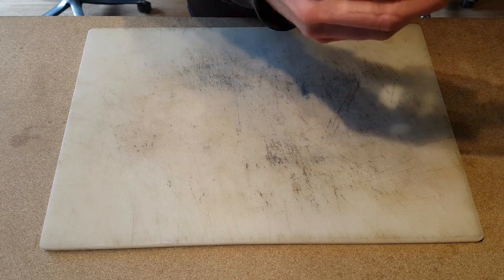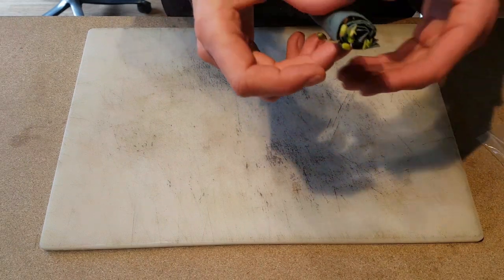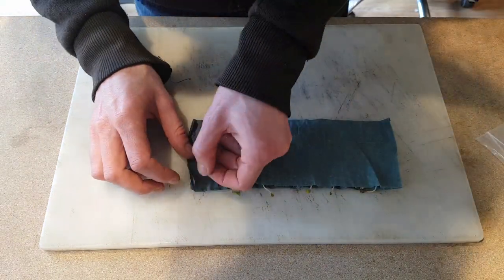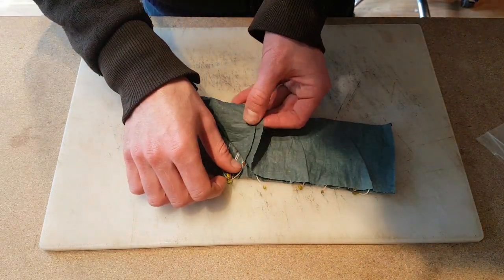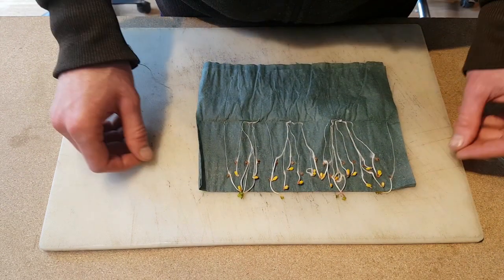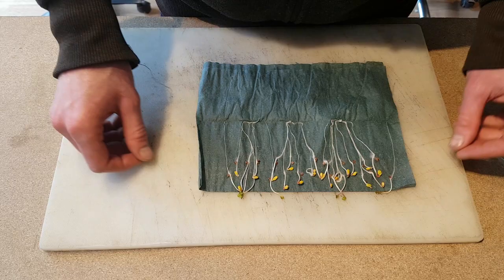After the seeds have had enough time to germinate, remove them from the plastic bag, unroll the sausage and unfold the tissue revealing germinated seeds. You can then count these seeds and times that number by four to get a germination percentage.